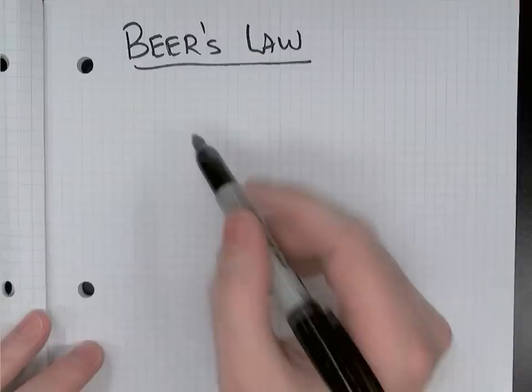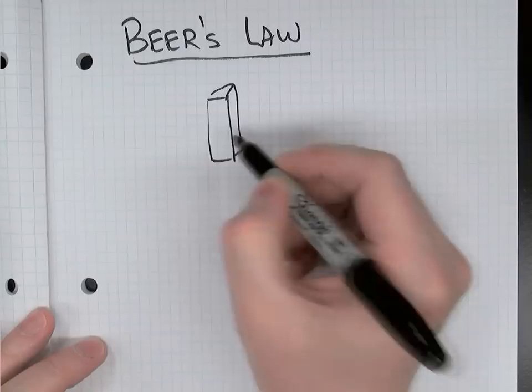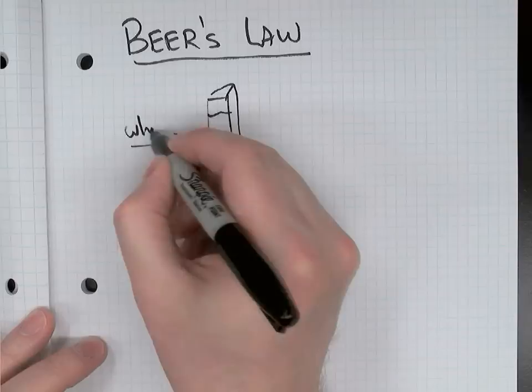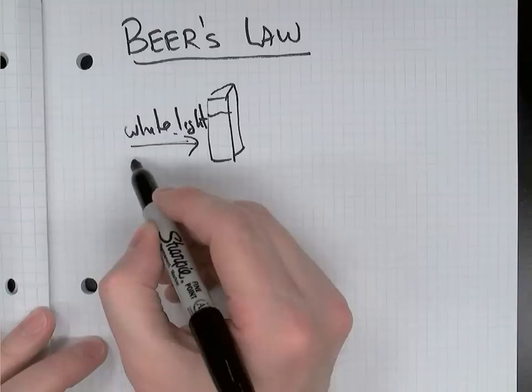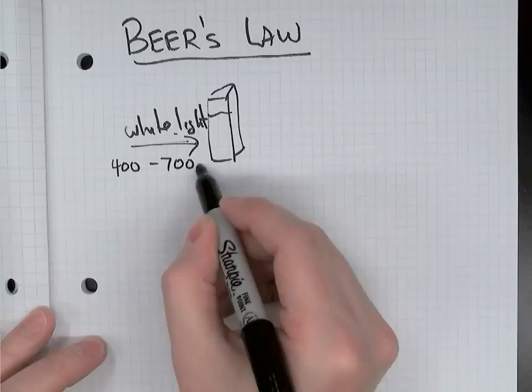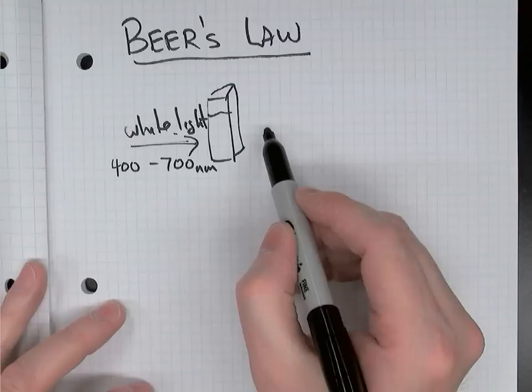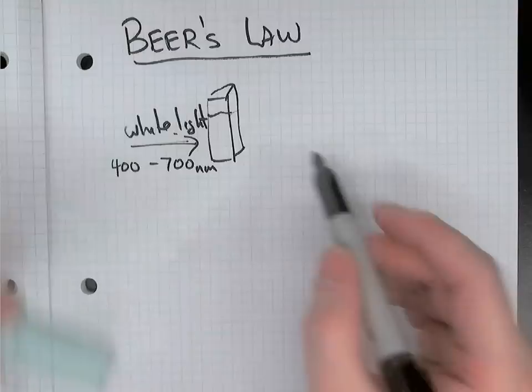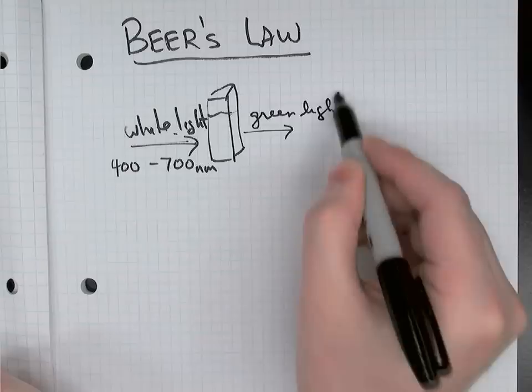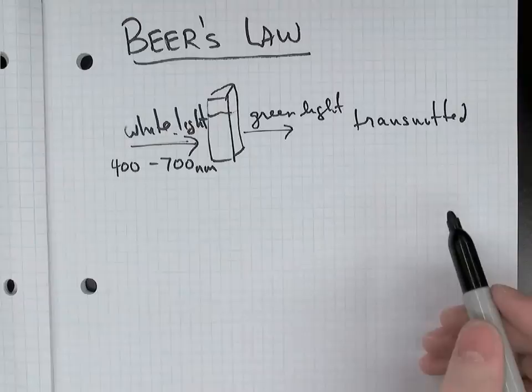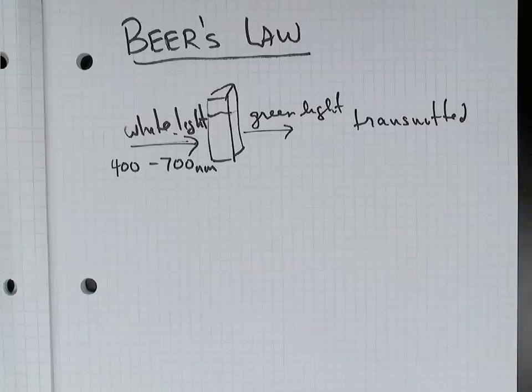If you think about why a solution is the color that you see — for example, this solution is green. We know that white light is entering the solution, and white light contains all wavelengths from 400 to 700 nanometers. The entire rainbow of light is mixed in white light. But what we see when we look at the solution is green, because green light is being transmitted — it's passing through. That implies that other wavelengths of light are being absorbed by the solution.